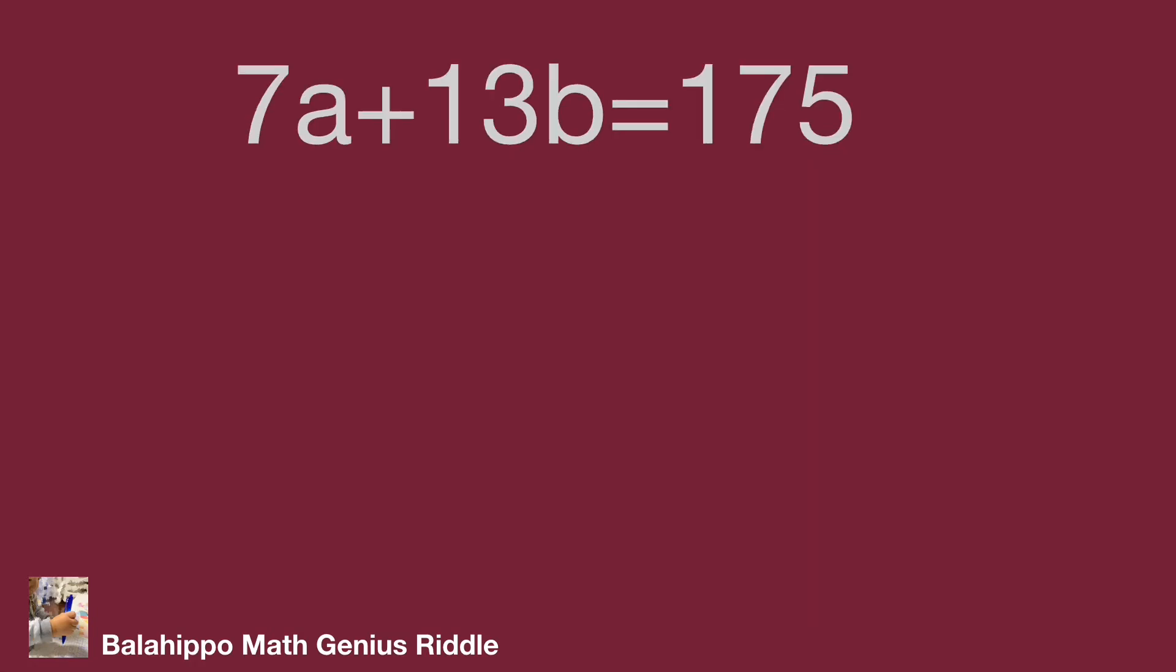Let's look at the question: 7a plus 13b equals 175. We have 7, 13, and 175. Can we find any relationship among them? First, factorize 175 equals 5 times 5 times 7.